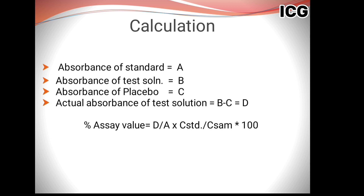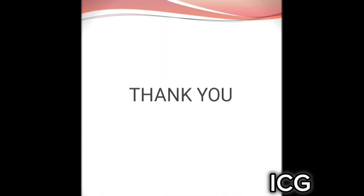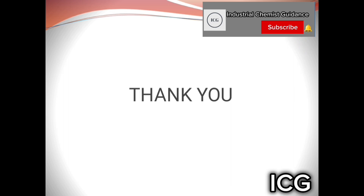When using placebo, subtract C from B to get D — where D is the actual net absorbance that should correspond to your analyte API. Use this D value in the formula: absorbance of sample divided by absorbance of standard, to find out your result. To watch more informative videos, subscribe to the channel and like the video. Allah Hafiz.